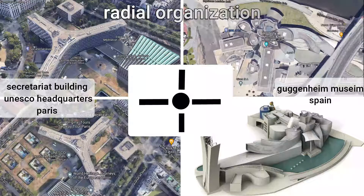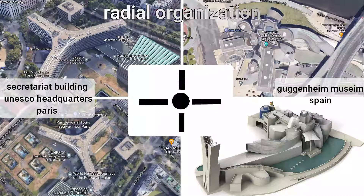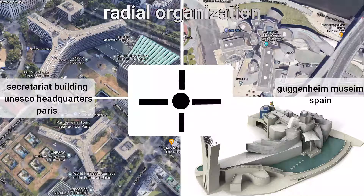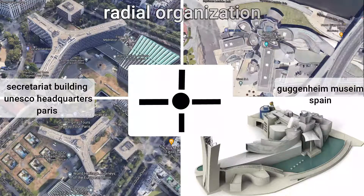Now we're going to see radial organisation. It consists of a central space from which linear organisations extend in a radial manner. The difference between radial and centralised organisations is that in radial organisation the secondary spaces are linear and there will be a gap between each linear space, whereas in centralised organisation the secondary spaces are more compact and clustered.